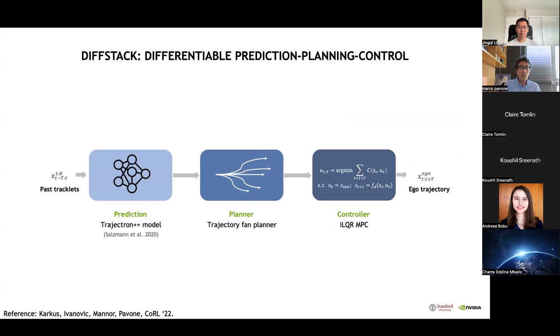Specifically, we start with a fairly standard modular architecture. It has a deep prediction model, Trajectron++, which consumes past tracklets for all traffic agents on the road and outputs probabilistic predictions about future trajectories. These predictions are fed into a planner, in this case a sampling-based algorithm that generates a set of candidate trajectories, scores them with a handcrafted cost function, and selects the candidate with the lowest cost. The trajectories are then further optimized by an optimization-based controller module, specifically an iterative LQR algorithm. This is a very standard pipeline that you will find in many AV companies.